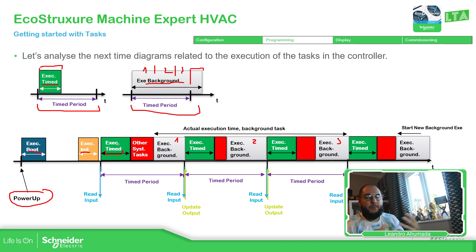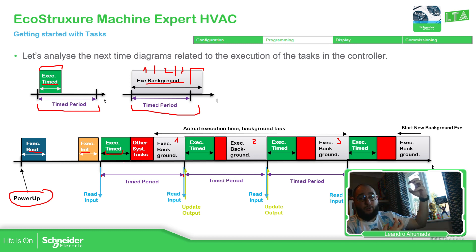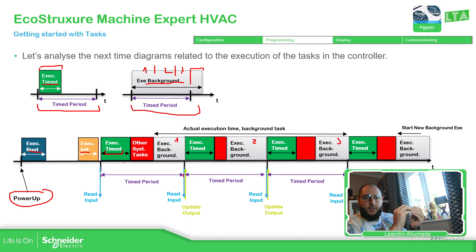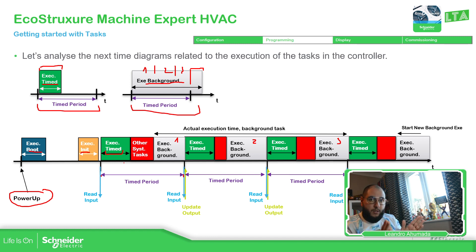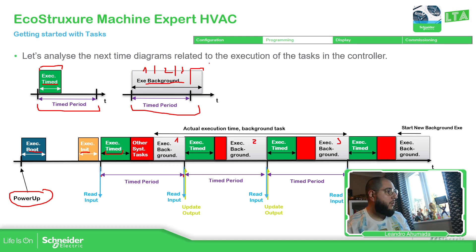Here you can see the priorities clearly. At power-up: boot task first, then init, then we enter the PLC scan cycle — read inputs, execute code, update outputs. During code execution we have the time task, some system tasks, and then the background execution, which can be partial or total depending on the configured time period. That is how this part works.